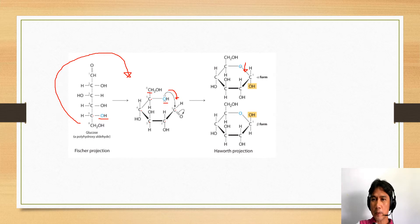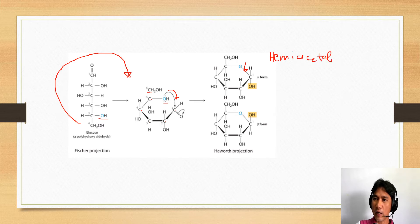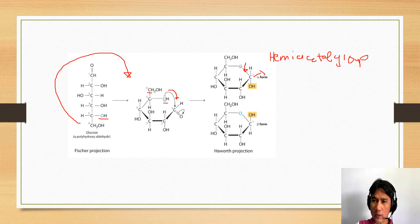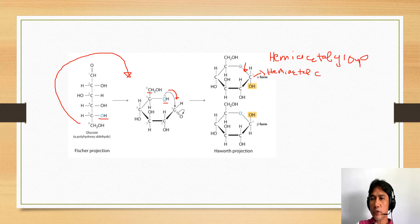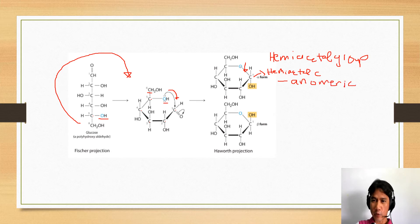As this oxygen attacks the carbonyl group on carbon number one, we form what we call a hemiacetal group. This carbon right here is the hemiacetal carbon — carbon number one is the hemiacetal carbon. This hemiacetal carbon is also known as the anomeric carbon.